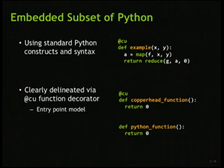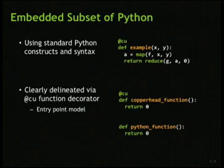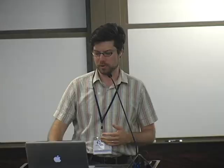We clearly delineate the portions of our code that we expect to conform to this embedded subset with a function decorator, a lot like what Travis did in his work. You just stick that little @cu decorator on the top, and that's enough to turn control over to our system. There's no type annotations or anything else that you have to give it. It's an entry point model, meaning you're running Python code in the normal Python interpreter. The first time you call a function with this @cu decorator, it's going to be running everything in Copperhead mode, compiling everything onto the hardware. Once we return, we'll just be running in the standard Python interpreter again.